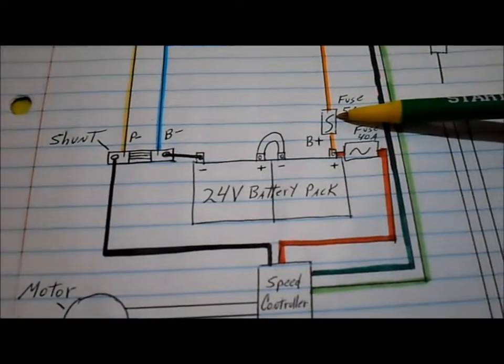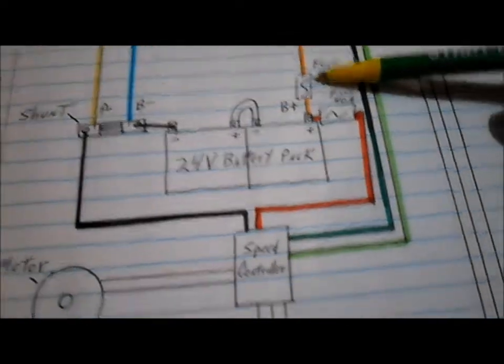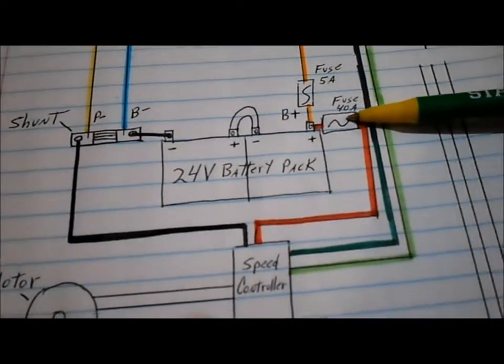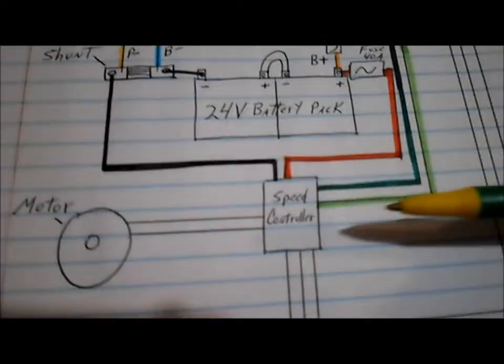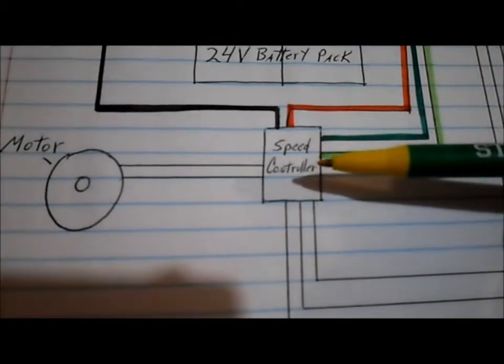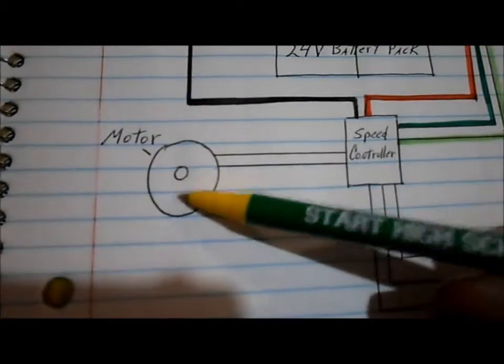We have a small 5 amp fuse in the small power line. We have a 40 amp fuse in the big power line. This is your speed controller. This is your motor.